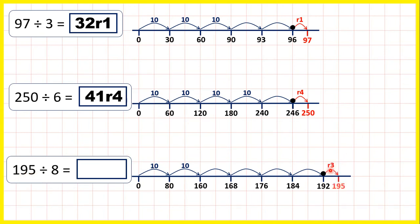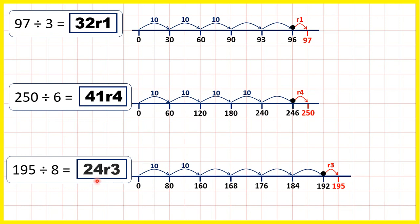So from 192, how many do we need to count on to get to 195? Well, 195 is just 3 more than 192, so our remainder is 3. So 195 divided by 8: we counted 10, 20, 21, 22, 23, 24 steps of 8, then we needed 3 more. So our answer is 24 remainder 3.